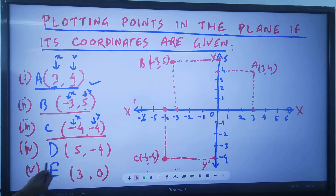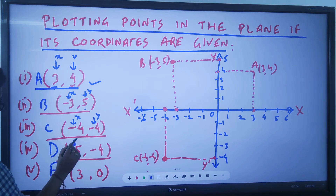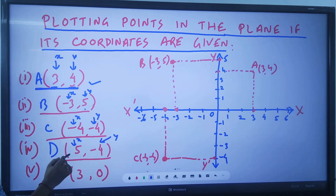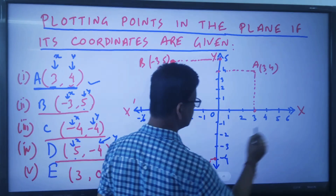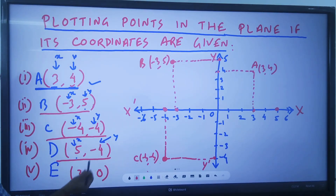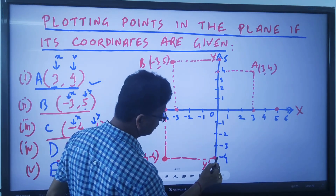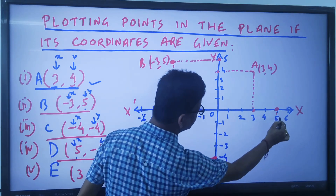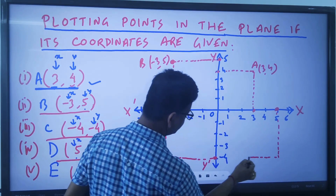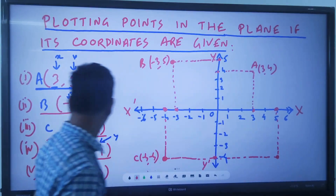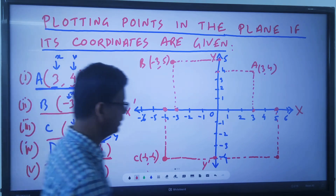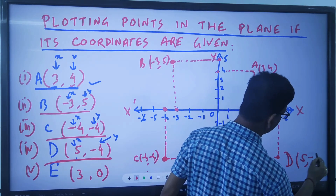Suppose I have to plot point D (5, -4). The corresponding x value is 5 and the corresponding y value is minus 4. On the x-axis, find where 5 is, and on the y-axis, find where minus 4 is. From both points, draw the corresponding perpendiculars. The point where they intersect is the required point D of (5, -4).